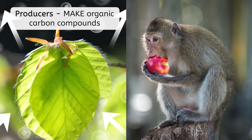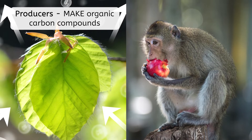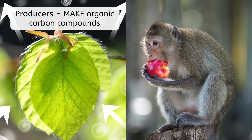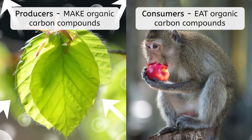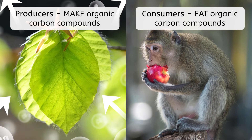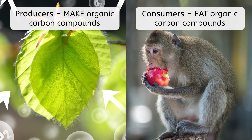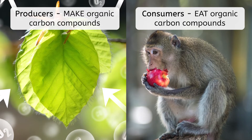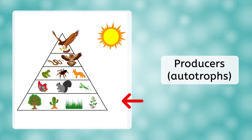Producers, like plants, make organic carbon compounds from carbon dioxide and sunlight. Consumers, like humans and other animals, eat organic carbon compounds that were once part of another living thing. Producers, also known as autotrophs, form the foundation of every food chain on Earth. This is because they are the only organisms that turn inorganic carbon compounds into organic compounds.